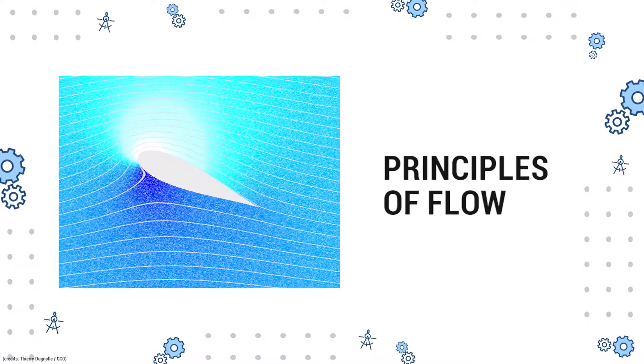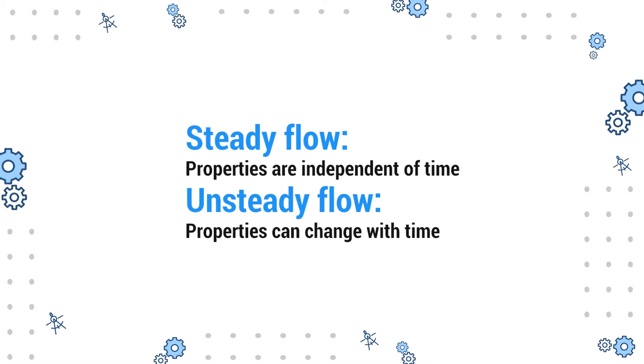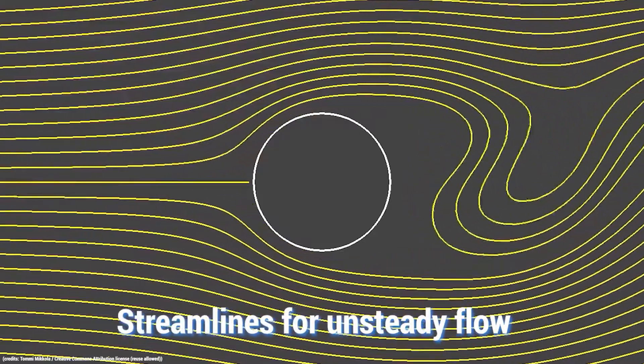You might be aware of various types of flows. A steady flow is where the properties of fluid such as pressure, velocity, density, etc. do not change with time, whereas in an unsteady flow the properties can change with time.